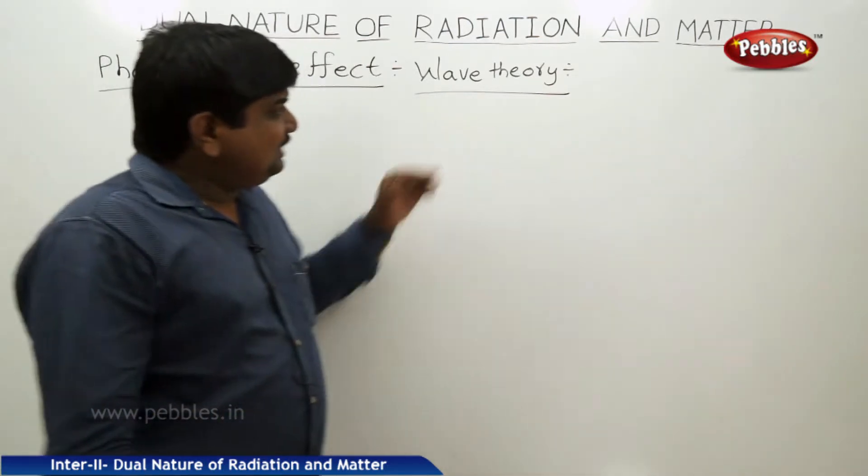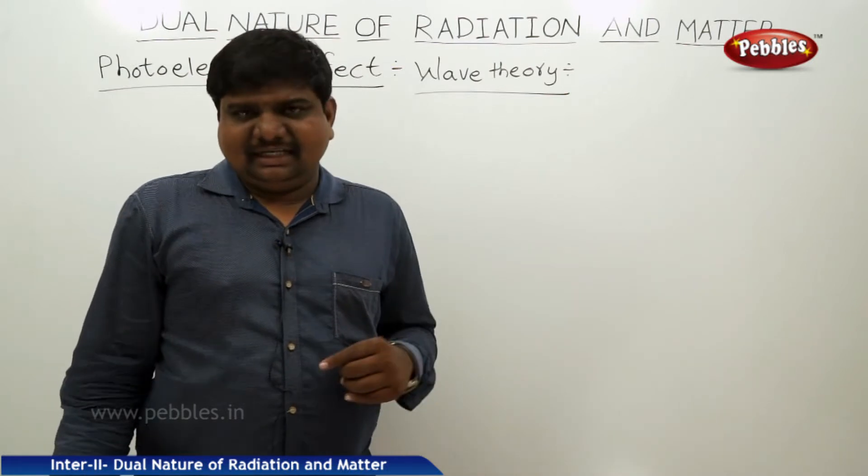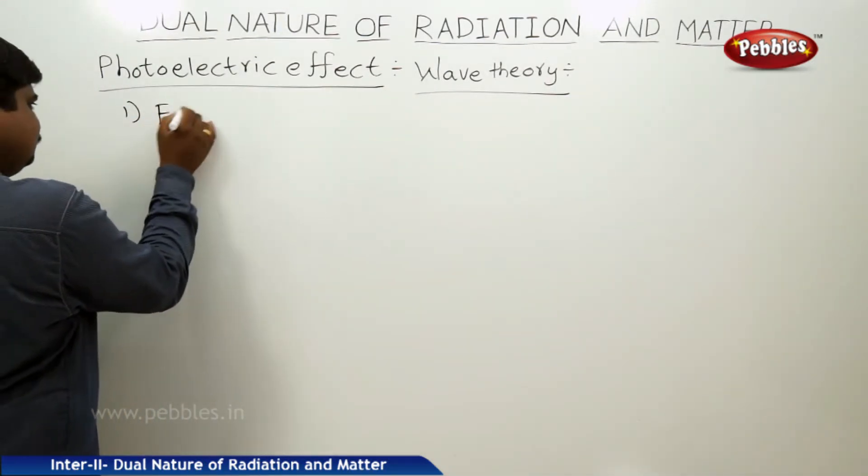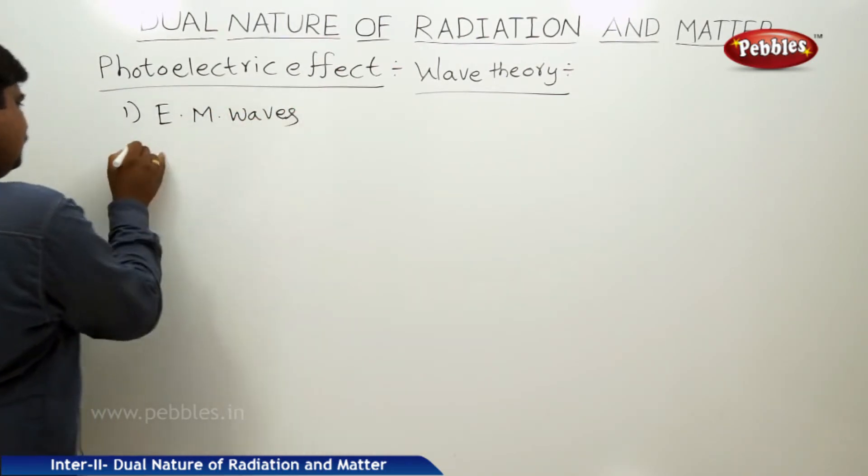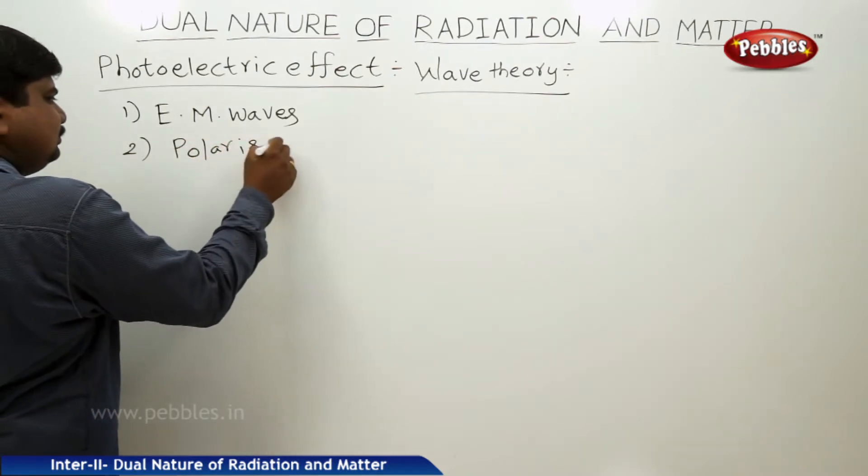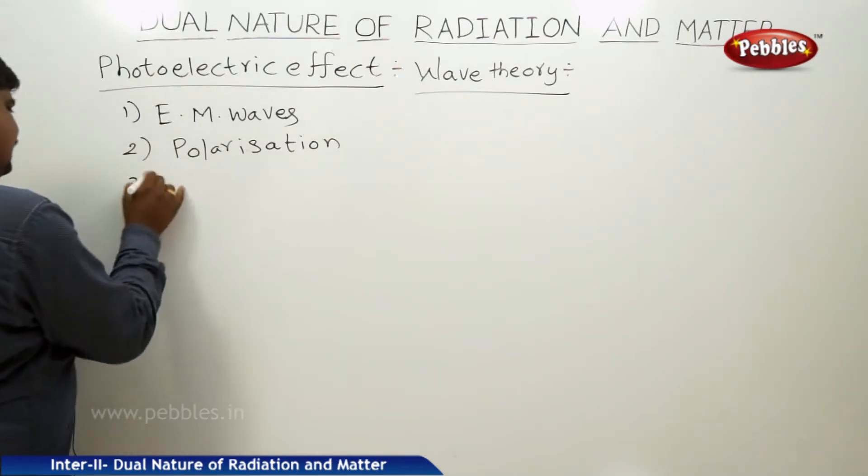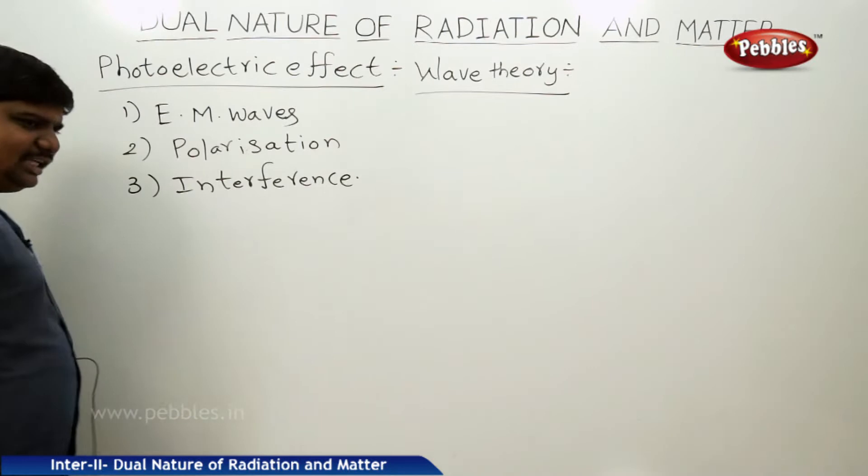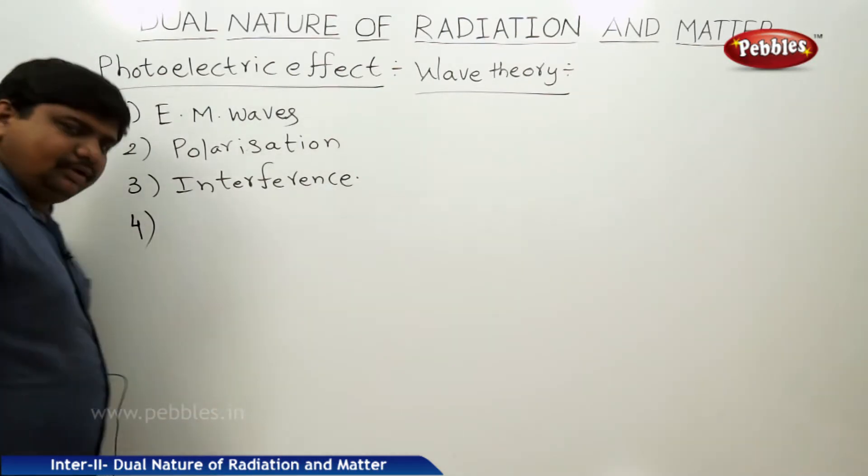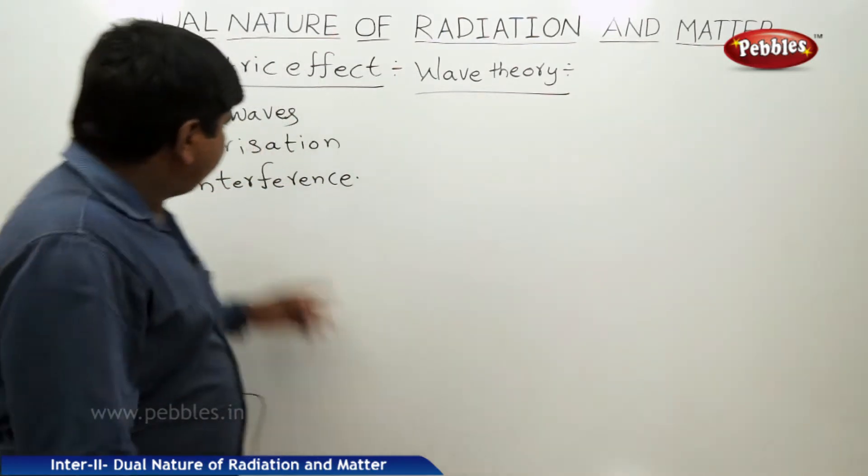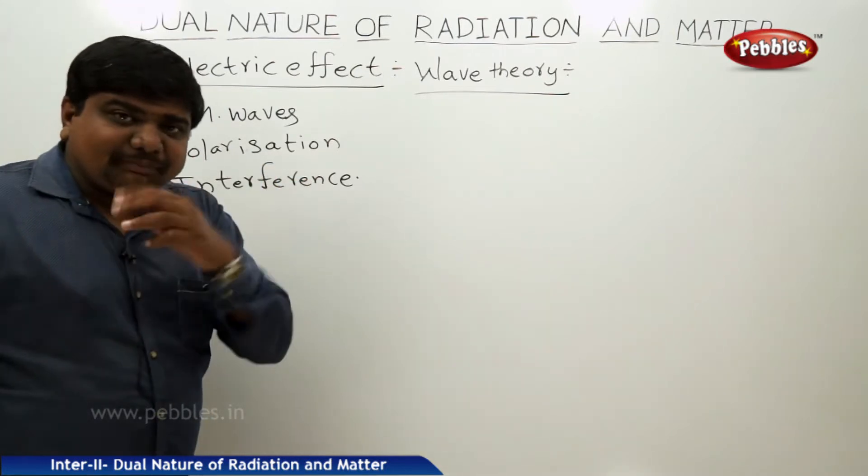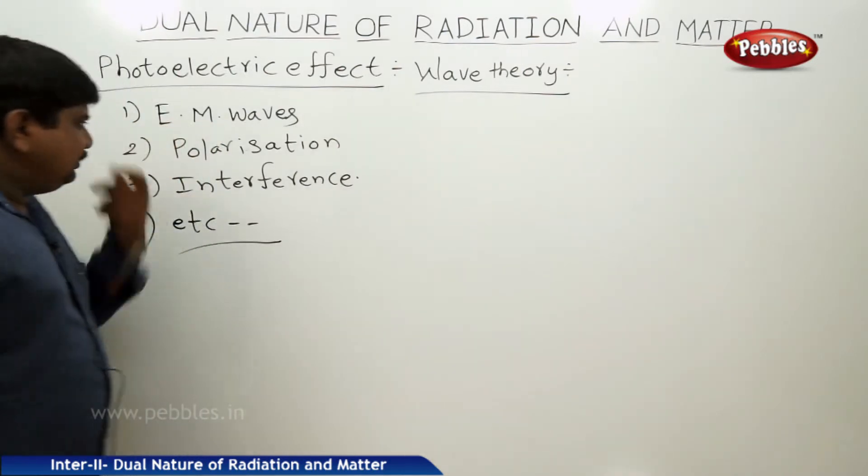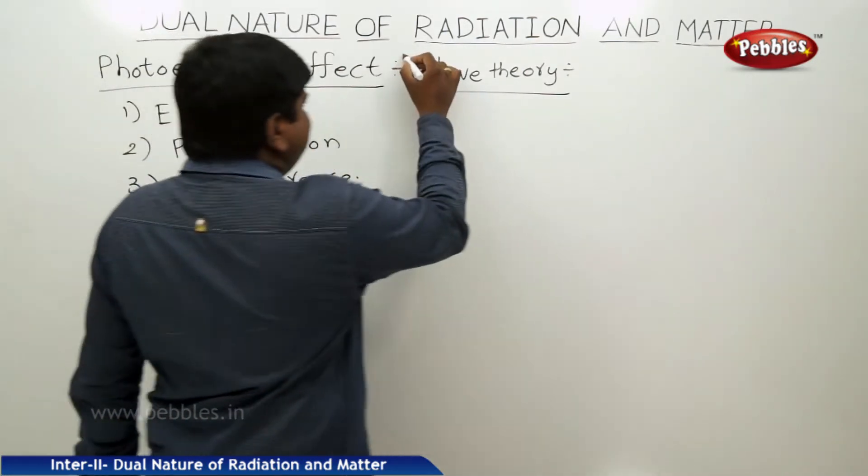Its title is photoelectric effect wave theory. In the 19th century, the wave theory of light or wave theory of electromagnetic waves were generated and proven by different scientists. This wave theory enables the electromagnetic nature of waves, the EM waves and polarization of the waves, interference of the waves, and many more explanations like Young's interference and these experiments. This proves the wave nature of the light. According to the proof of this wave nature of the light, one theory was developed that is called wave theory.